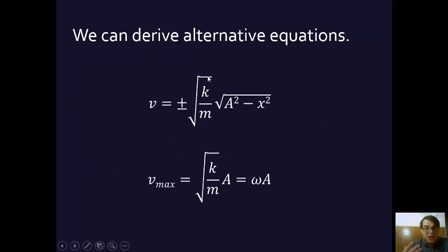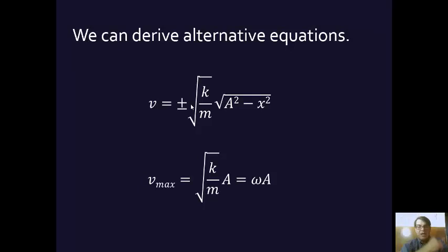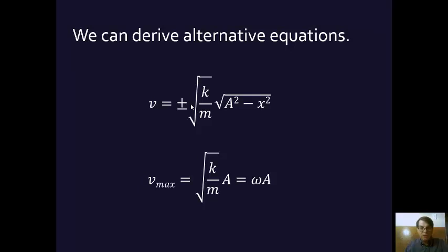v equals plus or minus — it's plus or minus because when you have v squared, you can get there by squaring a negative or by squaring a positive. You'll have to use your common sense to know whether v is positive or negative. Basically, anywhere where v is moving toward the positive amplitude, v is going to be positive, and anywhere it's moving away from the positive amplitude, v is going to be negative. So v equals plus or minus the square root of k over m, times the square root of the amplitude squared minus the displacement squared.